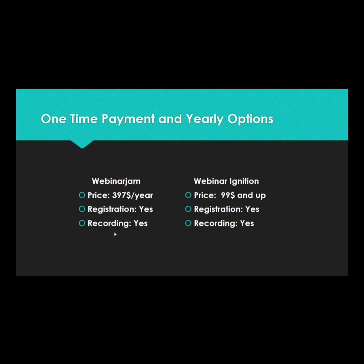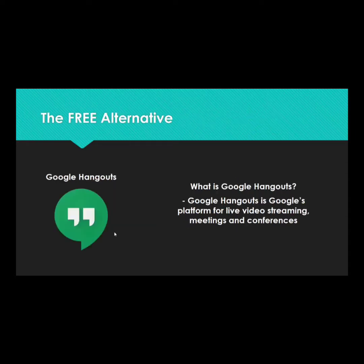WebinarJam has promotional apps integrated — for example, if you're holding a sales pitch you can add scarcity at the end with limited-time offers, payment buttons, and special promotions. It also includes recording. Then there's WebinarIgnition, a one-time fee of $99 — it's based on Google Hangouts, has registration, recording, awesome landing pages, and is also marketing-oriented.